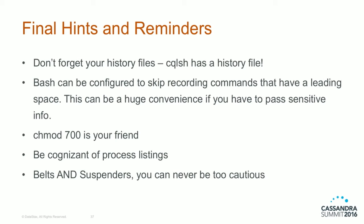Final hints and reminders. History files: if you create a user in the database at the CQLSH prompt, the password is stored in your CQLSH history file — go through and delete that. At the bash prompt, you can configure bash to not store commands that start with a space in history — use that. Chmod 700 is your friend: if you have a config file like a CQLSH config with secrets in it, don't let anybody else read it. Also be cognizant of process listings — if software receives credentials at startup, those credentials may appear in a full process listing. We're very cognizant of this when building DSE and try to avoid secrets showing up in process listings. Belts and suspenders — you can never be too cautious.